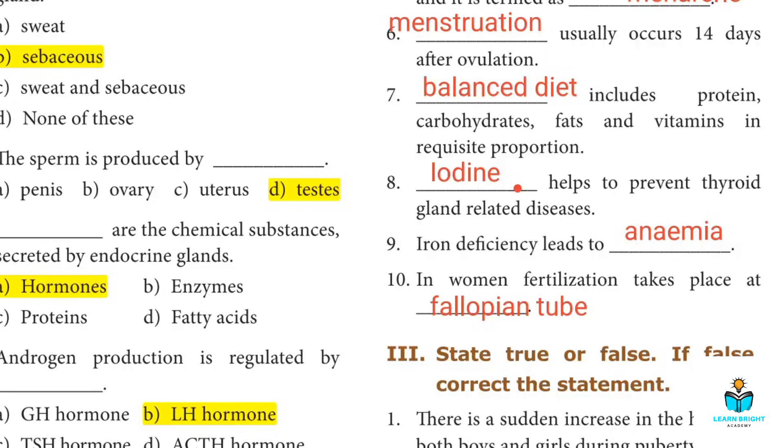Tenth question: In women, fertilization takes place at the fallopian tube.